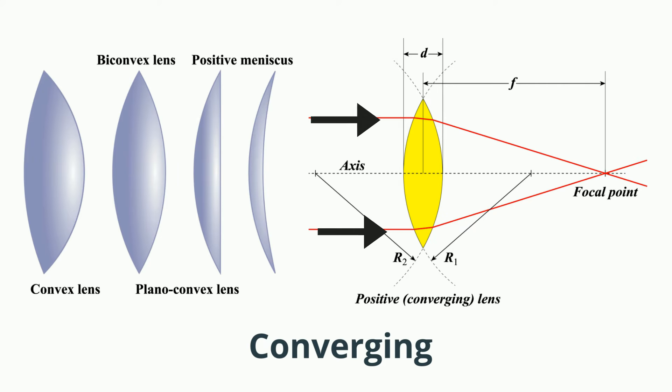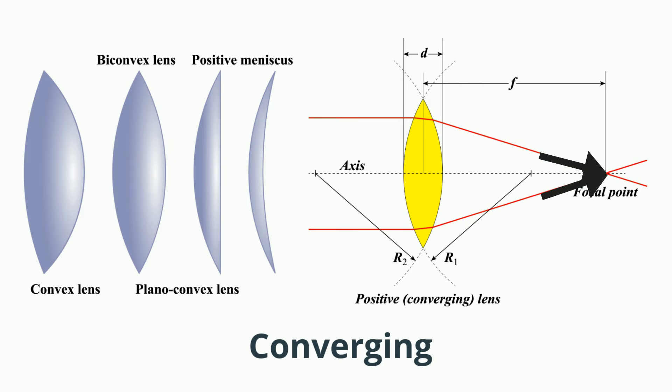As the light passes through the lens, it bends towards the center. They are also called positive lenses because of the location of the focal point.